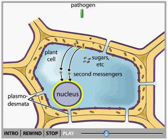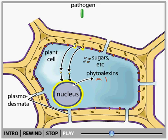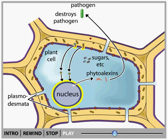Here, the cell responds by expressing certain genes. After certain genes are expressed, the plant begins to produce a class of molecules called phytoalexins. Phytoalexins are usually phenolics or terpenes, and a cell produces them within hours of the onset of infection. These molecules can kill a variety of invading pathogen species.